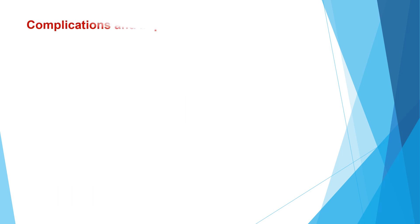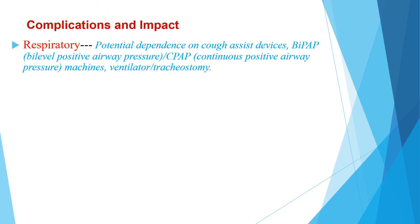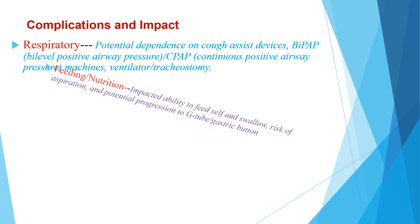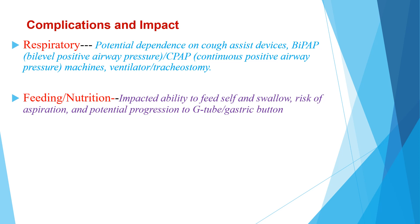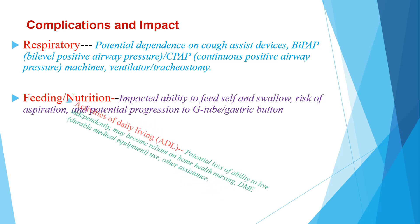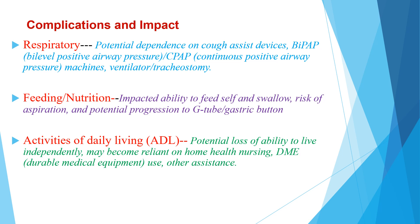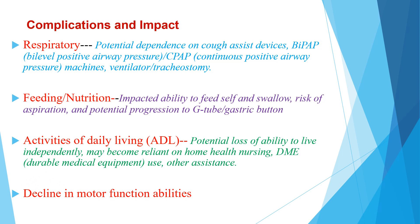Regarding complications and impact, the first complication is respiratory — potential dependence on assisted devices such as BiPAP, CPAP, ventilator, and tracheostomy may be needed. The other is feeding and nutrition: impaired ability to feed and swallow and the risk of aspiration can occur, so enteral feeding may be needed. Activities of daily living are also affected, with potential loss of ability to live independently, possible reliance on home health nursing, durable medical equipment, and other assistance, as well as decline in motor function abilities.